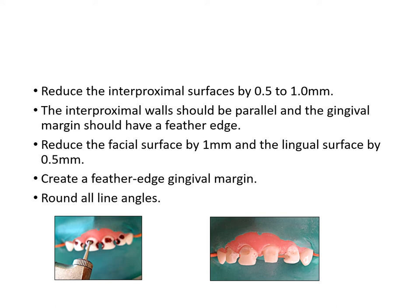Since composite resin needs space, minimal crown preparation is required. In the proximal areas, remove approximately 0.5 to 1 millimeter to make space for the composite resin. Ensure that the proximal walls are parallel and the gingival margins have a feather edge or knife edge — not a chamfer or shoulder — so that the composite merges efficiently with the tooth structure.